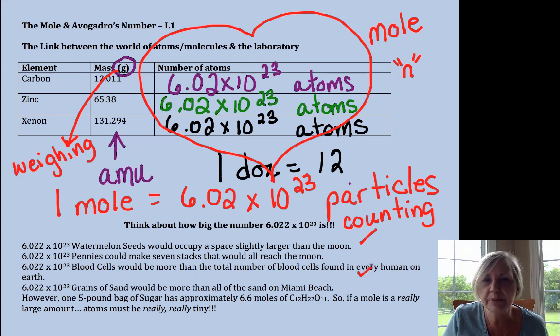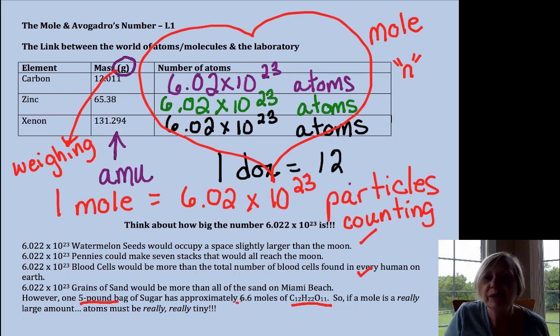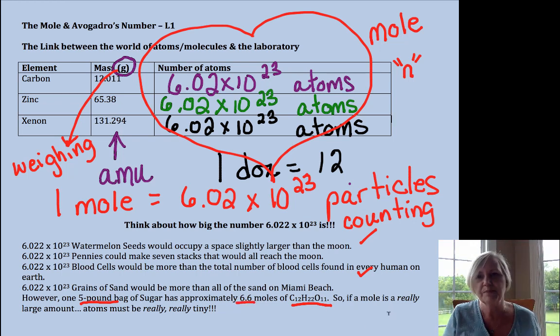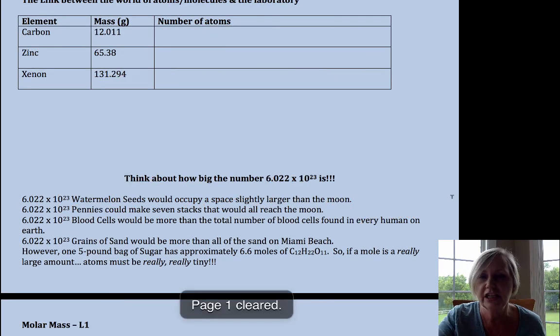If we have that many blood cells, it's more than the blood cells that we would have in every human being. And yet, if we look at the atom and molecular level, a five pound bag of sugar would have not one mole, but 6.6 moles. So the mole is a very, very handy term. It's going to be used all year.